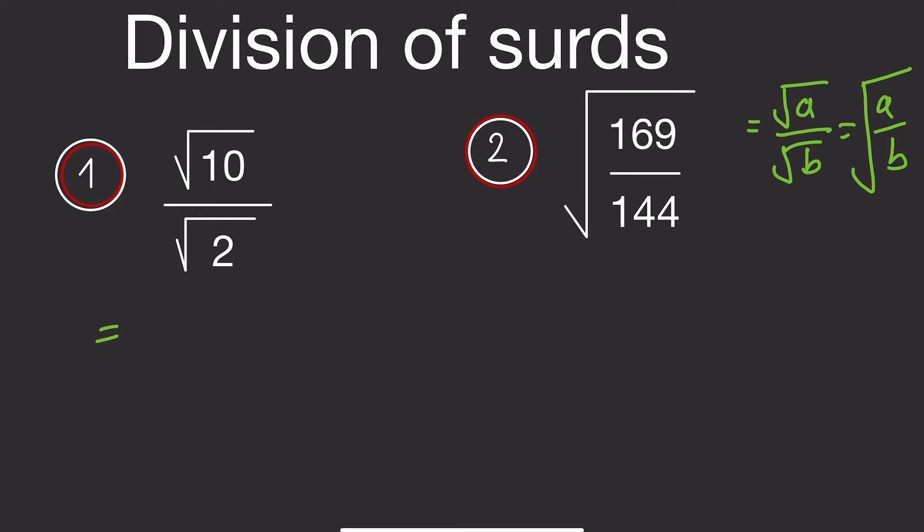So I have root 10 divided by root 2. It's difficult to simplify directly. The best thing to do is to put all of them under the common root. So following the law, this will become 10 over 2 under one root.